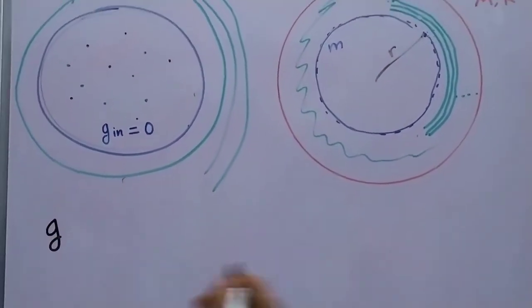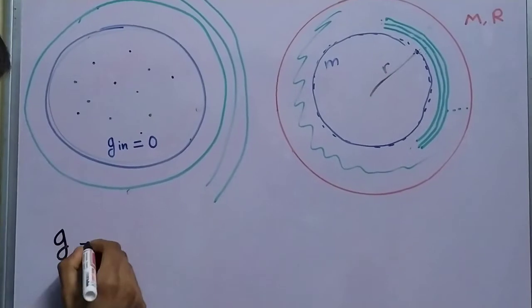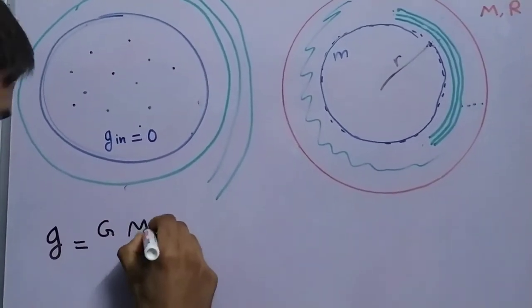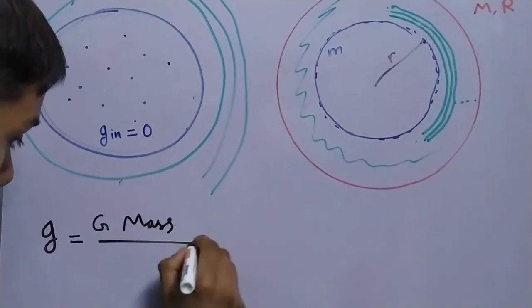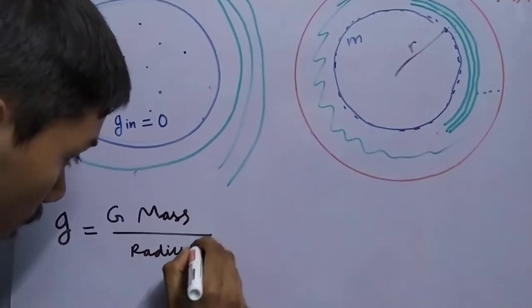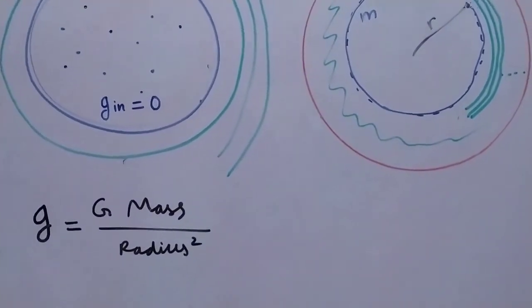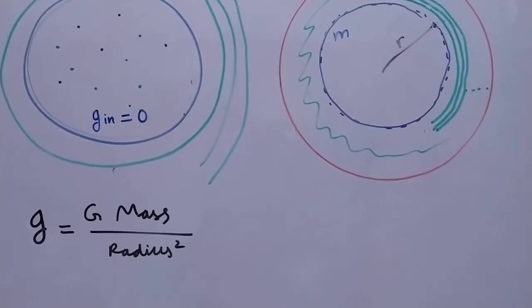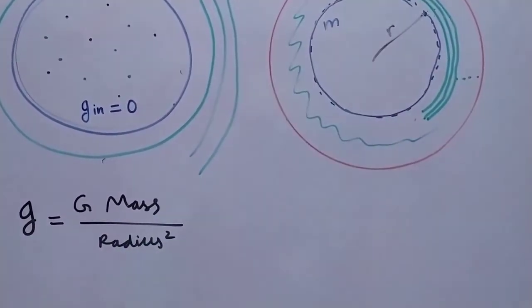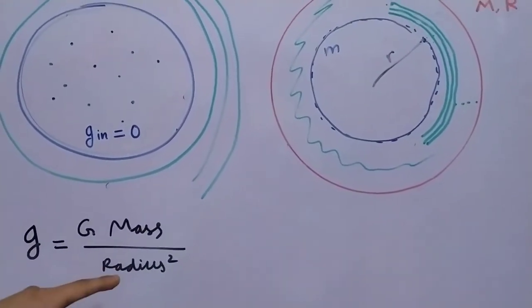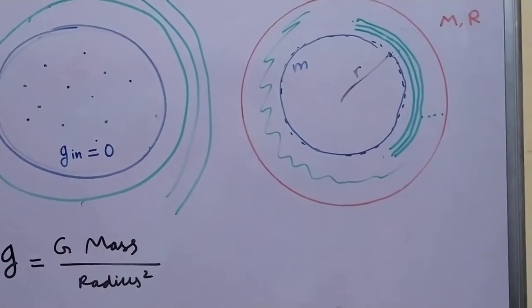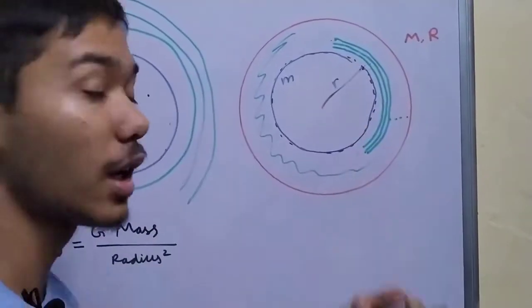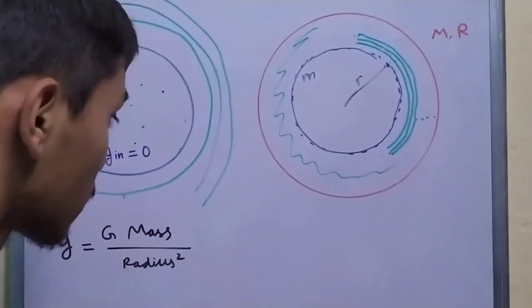So G at any point is G times the mass divided by your radius square. If it's a point or any hollow body, in this case a solid sphere. Now we will calculate the mass using our assumption that the density is uniform. So for example, it's a planet having a uniform density.